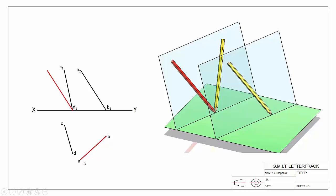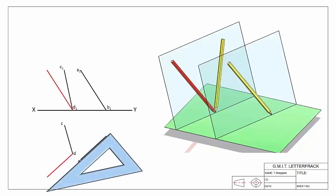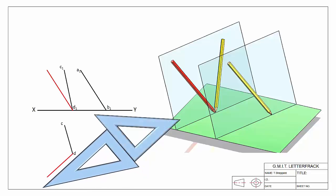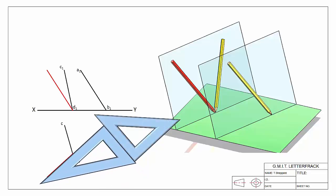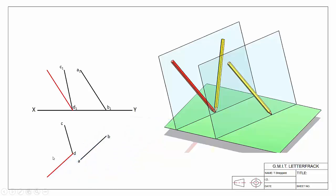We've picked AB as our line to copy, and we've attached it to point D, so we want to do the same in our plan view. Move it down to D and use the sliding set squares to transfer the angle. Again, the angle is all-important; the distance is not so important for the moment.